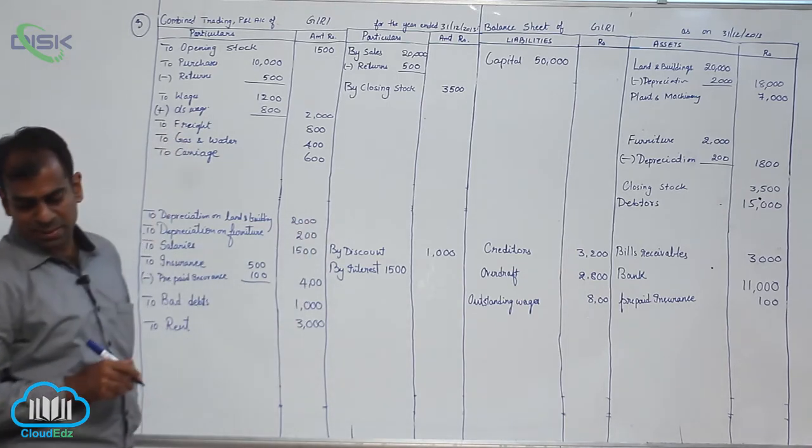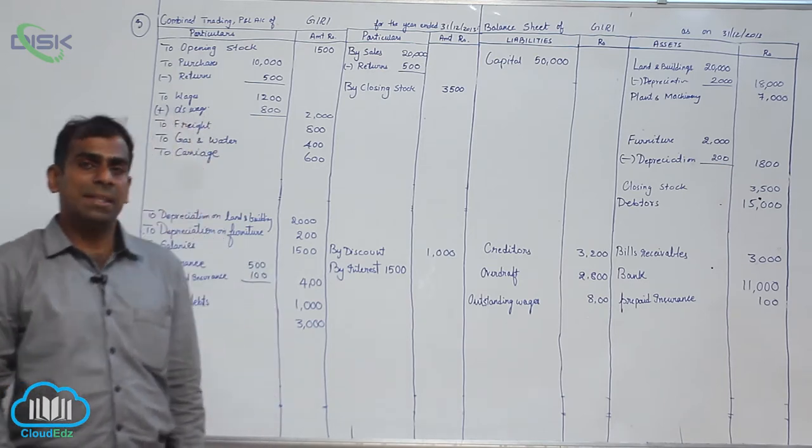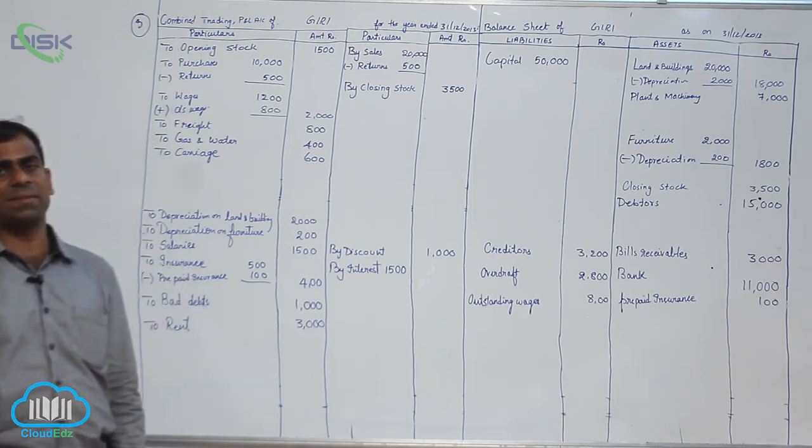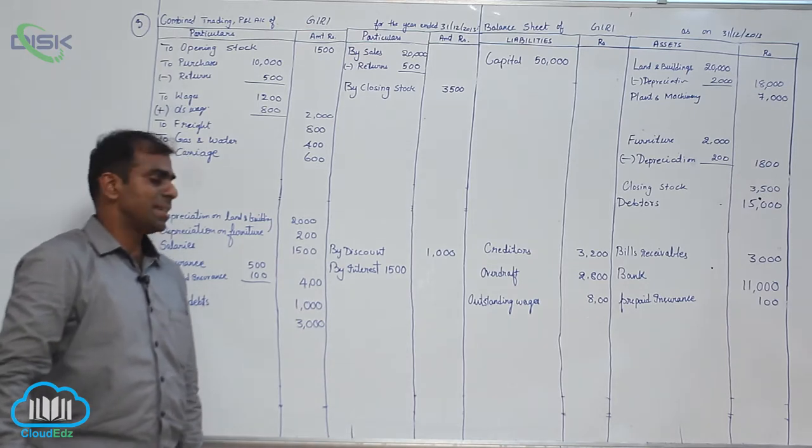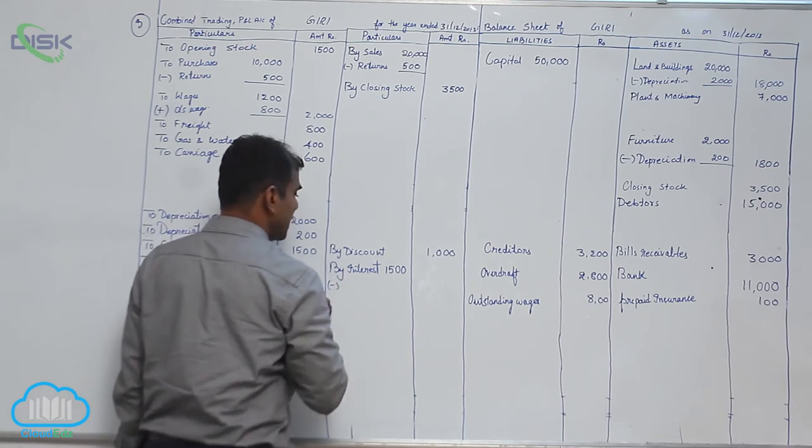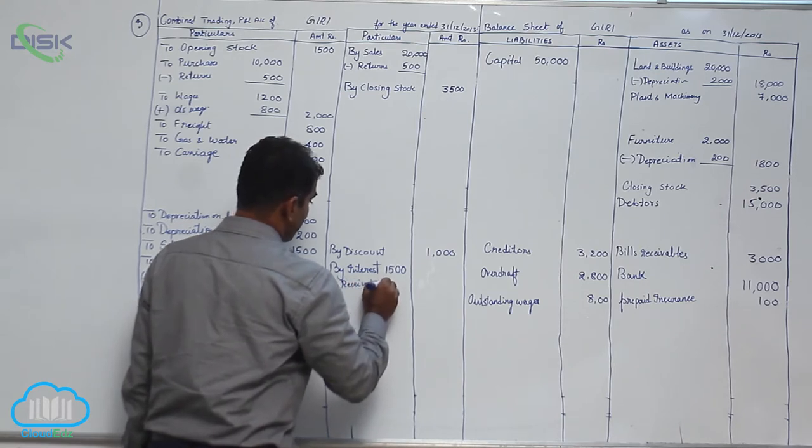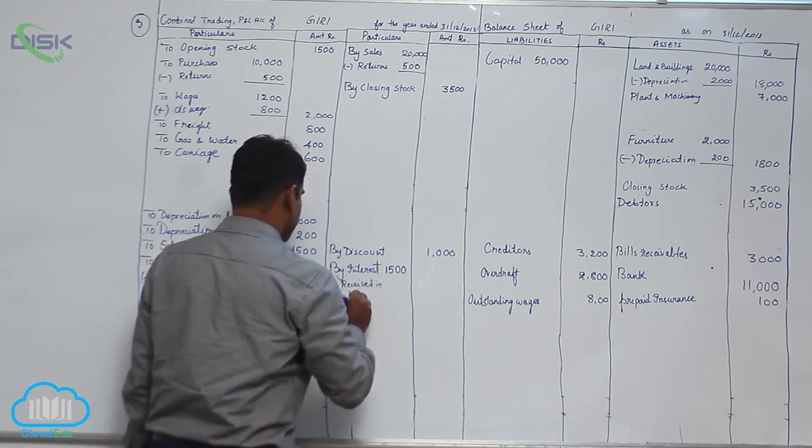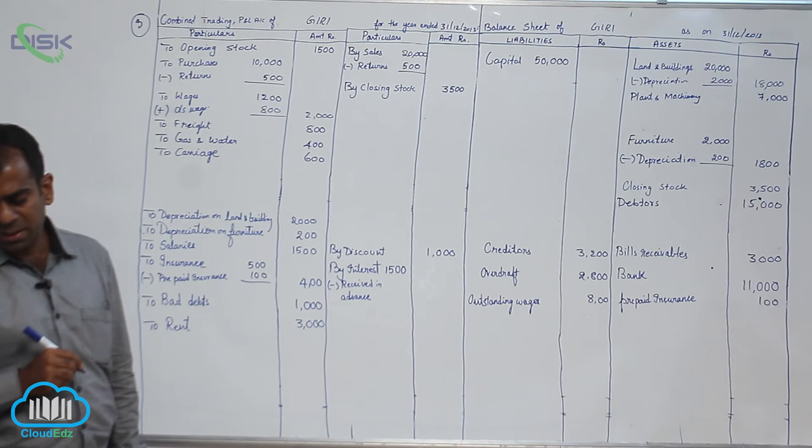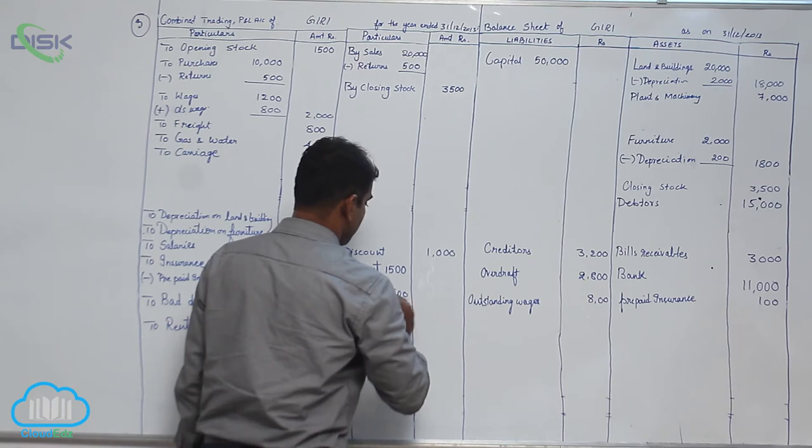The next adjustment is interest received in advance. Received means always income, so interest received is income received in advance. If we treat this as an adjustment, we need to deduct it in P&L account from the concerned income. Minus received in advance - 1500 minus 500, that is 1000.